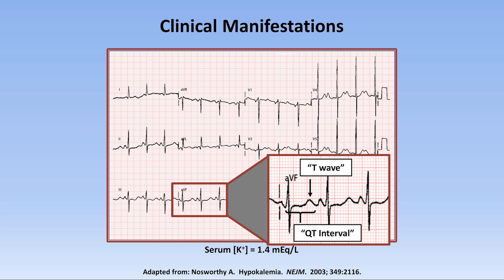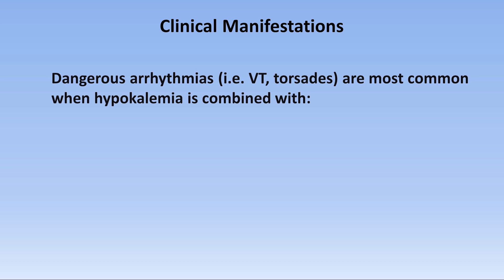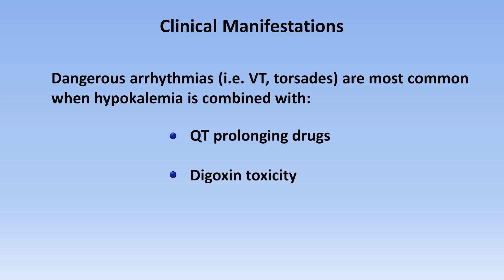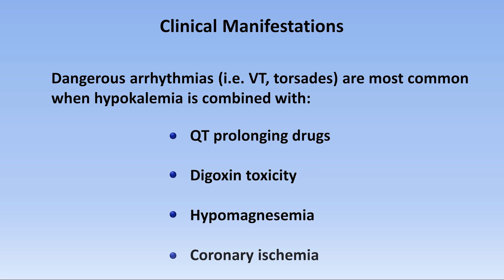Actually, though, this is not the T-wave — rather the U-wave. The significance of the Q-U interval is essentially unknown. Of course, EKG changes aren't harmful in and of themselves, but rather they are a marker of increased risk of dangerous and potentially fatal arrhythmias, such as ventricular tachycardia and torsade. Such rhythms are most common when hypokalemia is combined with QT-prolonging drugs, digoxin toxicity, hypomagnesemia, and active coronary ischemia.